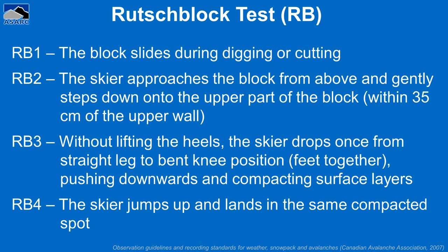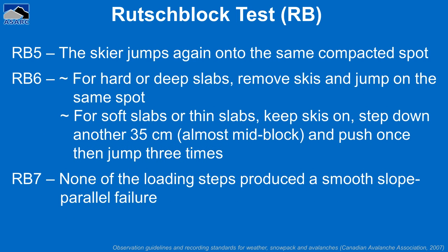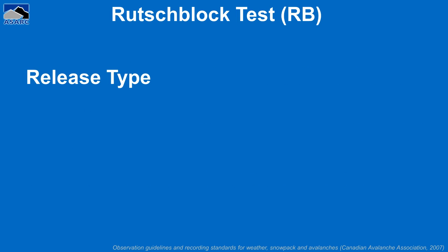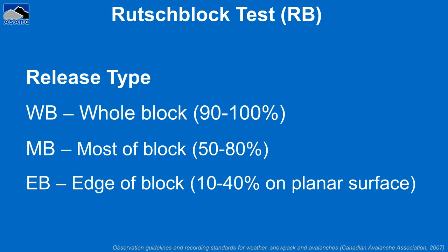The seven steps are listed here again. They are also listed in the observation guidelines and recording standards for weather, snowpack, and avalanches published by the Canadian Avalanche Association. For reporting a rutschblock result, the release type is also noted: whole block if 90 to 100% of the block releases; most of block if 50 to 80% releases; and edge of block if 10 to 40% of the block releases on a planar surface.